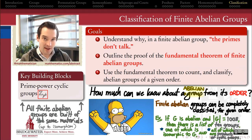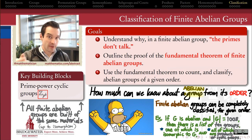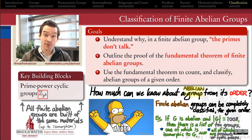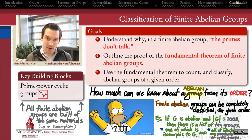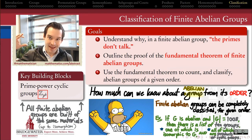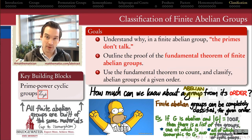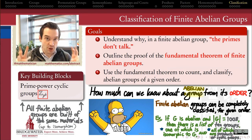We have a goal to be able to classify all finite abelian groups of a given order. You tell me the order of the group, if it's abelian, I can tell you a full list of all the possible structures that group can have. That's the power of the fundamental theorem of finite abelian groups. But anytime we're dealing with finite numbers, number theory rears its ugly head. The key ingredient to understanding why the fundamental theorem is true is to understand why, within a finite abelian group, the primes don't talk.